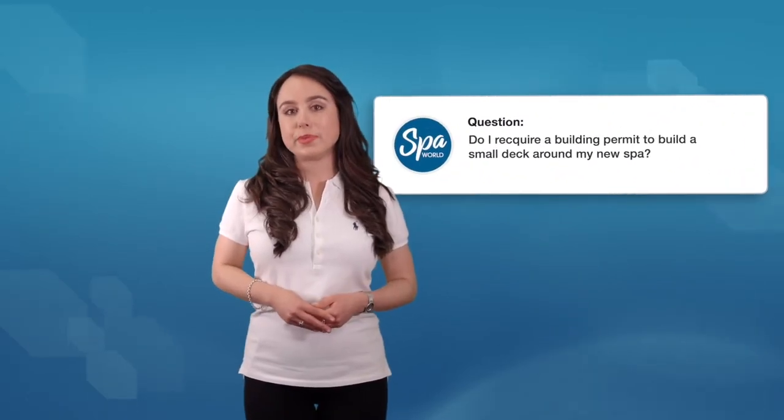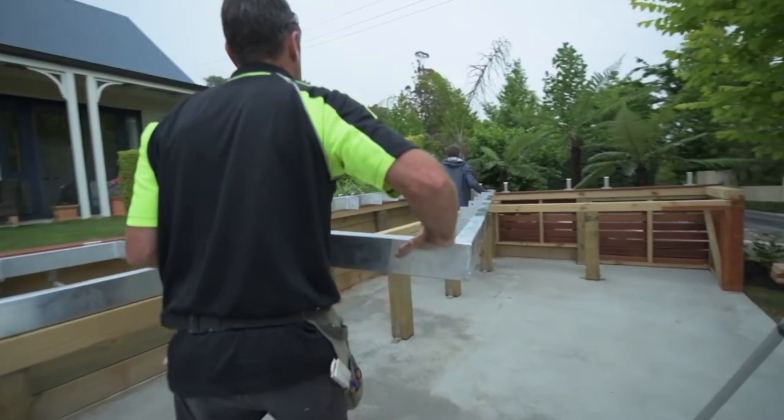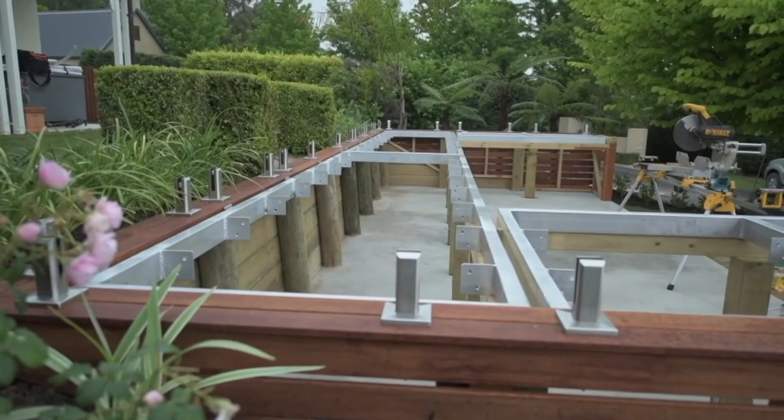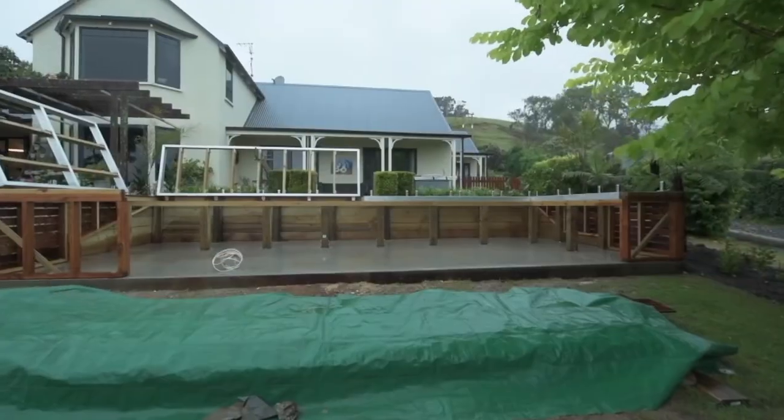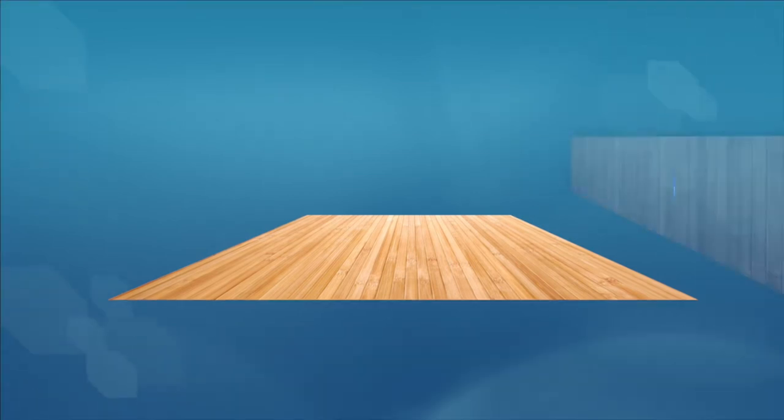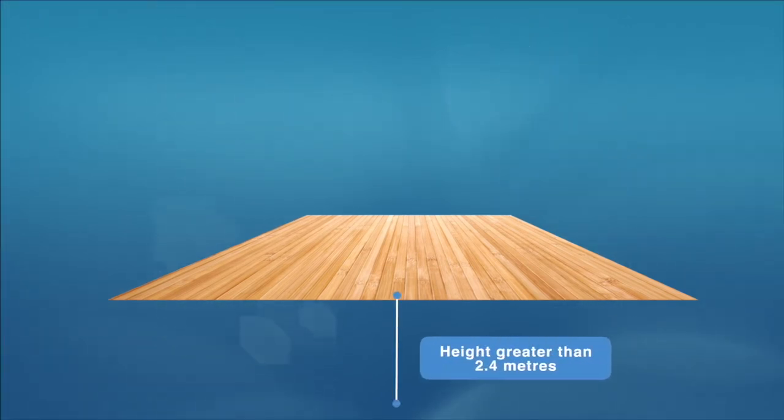Do I require a building permit to build a small deck around my new spa? All decks are required to have a building permit in WA, unless exempt by the local council. You may also require a planning permit if the deck is raised to be either equal or greater than 500 millimetres from the existing ground level, is closer than 900 millimetres from the property line or exceeds a height greater than 2.4 metres. The best thing to do is to contact your local council.